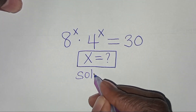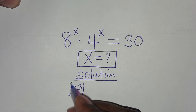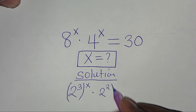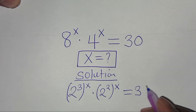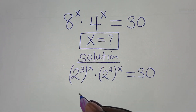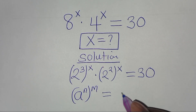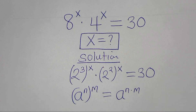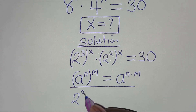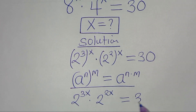Solution: we can express 8 to the power x as 2 to the power 3, raised to the power x, times 4 to the power x expressed as 2 to the power 2, raised to the power x, and this is equal to 30. These are in the form of a to the power n, raised to the power m, which we can express as a to the power n times m. Applying this exponent property, we have 2 to the power 3x times 2 to the power 2x, equal to 30.